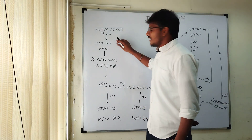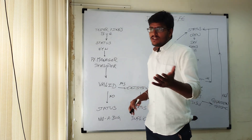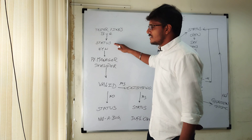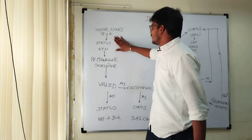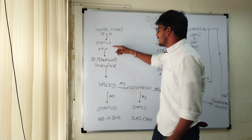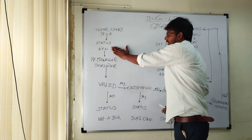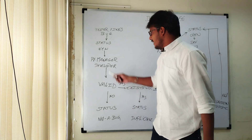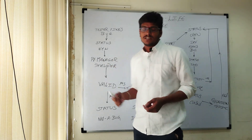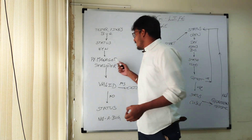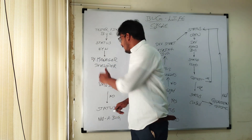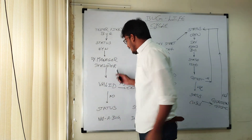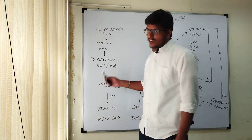We have to rectify this bug and match the functionalities of the application to its requirements. Once the bug status is marked as 'New', it is reported to the development team's project manager. The project manager will verify and evaluate the bug to see whether it is a valid bug or not.